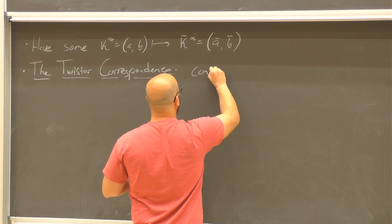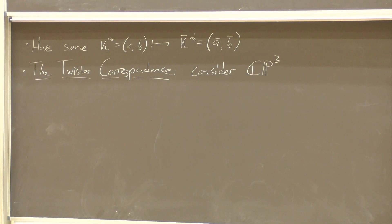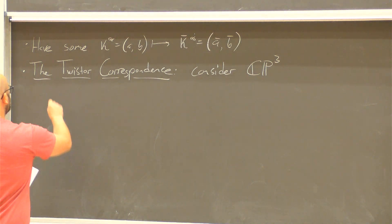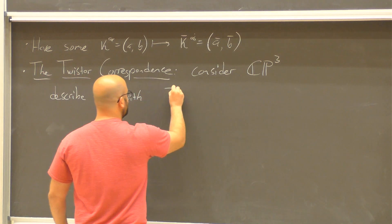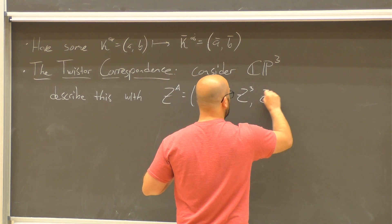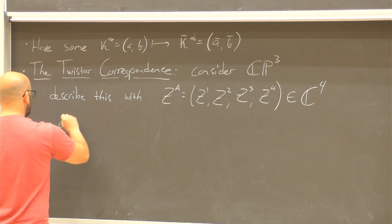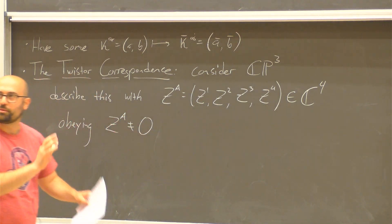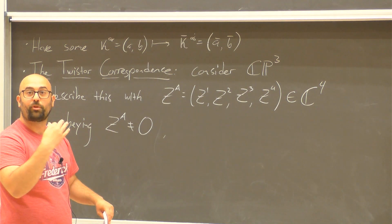Let's consider the complex projective space CP^3. This is just the space of all complex lines through the origin in C^4. A hands-on way of describing any complex projective space is just in terms of homogeneous coordinates. You can describe CP^3 with four complex numbers Z^A = (Z^1, Z^2, Z^3, Z^4) in C^4. These obey that they can't all be zero — we remove the origin — and we consider them equivalent if they differ only by an overall complex rescaling: Z ~ rZ for all non-vanishing complex r.